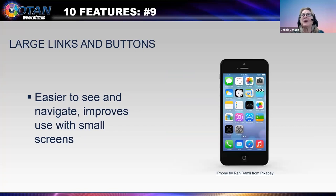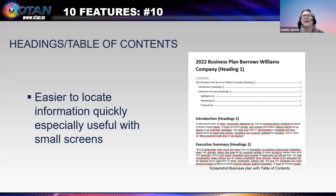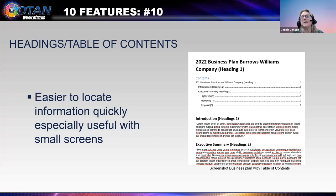Slide 15 is feature number nine: large links and buttons, as shown in the image of a smartphone. This feature makes it easier to navigate the website and is especially important on mobile or tablet devices with smaller screens. This is good for the elderly, people using small screens, or people who have misplaced their glasses. Slide 16 is our 10th feature: headings and tables of contents. You can see a business plan with a table of contents linking at the beginning of the document. These features are required for use of a screen reader, but they're good for everyone trying to find information quickly. A table of contents assists everyone to move around quickly to the place you want to start — good for people with learning disabilities, those using mobile devices, and everyone who wants to zero in on information quickly.